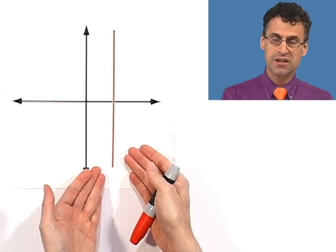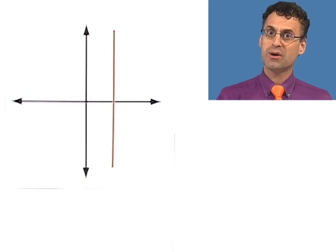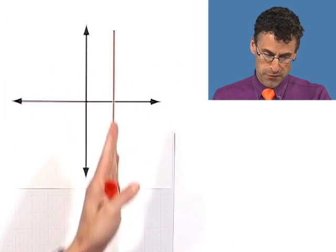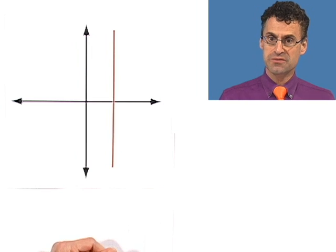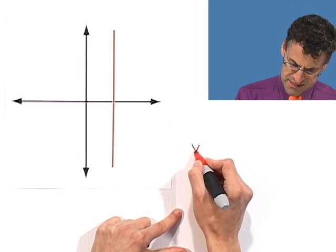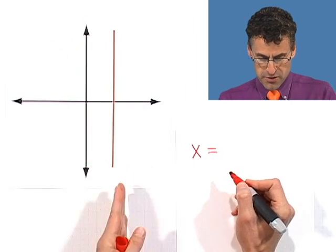what do we do? We say this slope is undefined, and instead to write an equation of it, all we do is write what it is. It's all the points for which x is a particular fixed value. So, this is kind of a funny-looking equation for a line. It's x equals the value of the x-intercept.